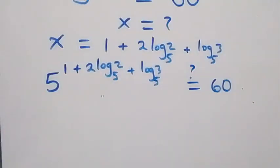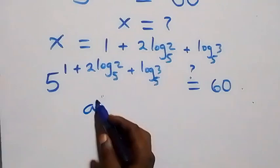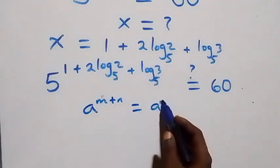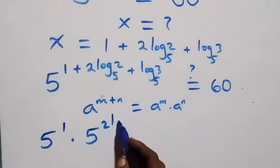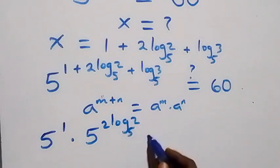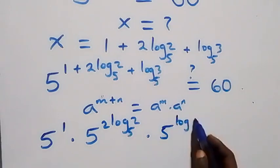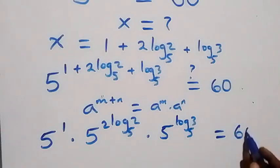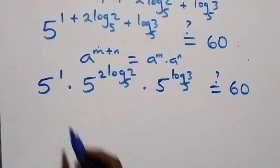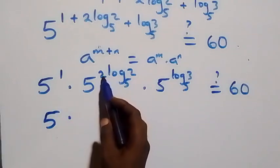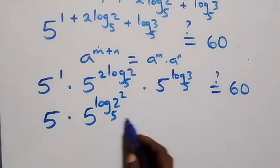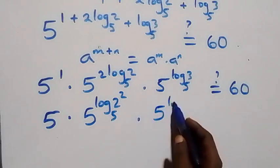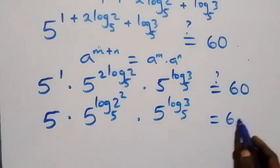Using the law of indices — a^(n+m) equals a^n times a^m — the left-hand side becomes 5^1 times 5^(2·log₅2) times 5^(log₅3). Applying the power rule, 5^(2·log₅2) becomes 5^(log₅(2²)), which equals 5^(log₅4).